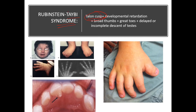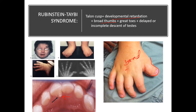Now Rubenstein-Taybi syndrome. In Rubenstein-Taybi, the key feature is talon cusp — 'T' for Taybi, T for talon cusp, you can remember it like this. See this — this is the talon cusp, pointed here. Then developmental retardation, broad thumbs — you can see the thumbs are very broad — and broad great toes. Also delayed or incomplete descent of testis.